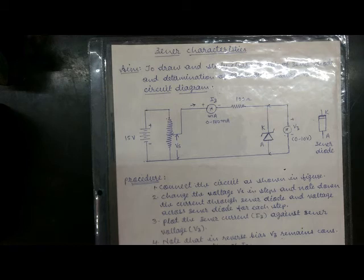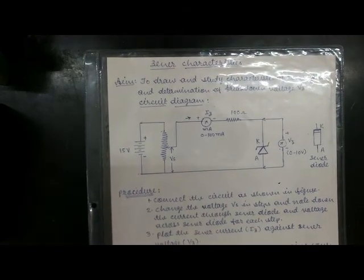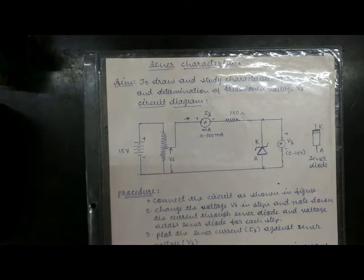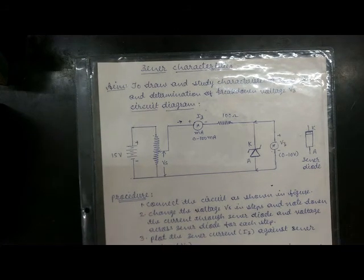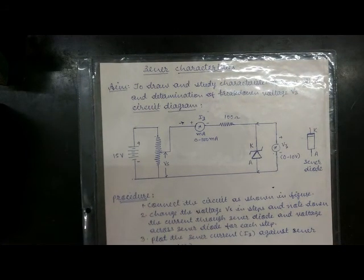In this Zener characteristics experiment, we have studied the Zener diode characteristics. First, let us discuss what is the aim of our experiment. The aim of our experiment is to study the characteristics of a Zener diode for determination of the breakdown voltage of Zener, Vz. See in this chart the circuit diagram of this Zener diode.